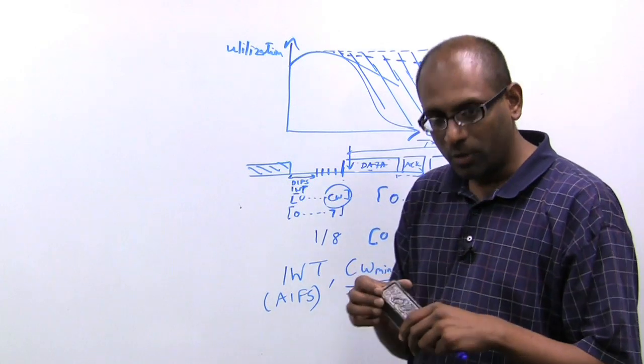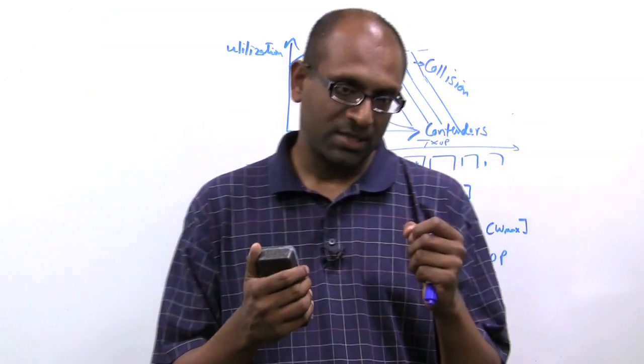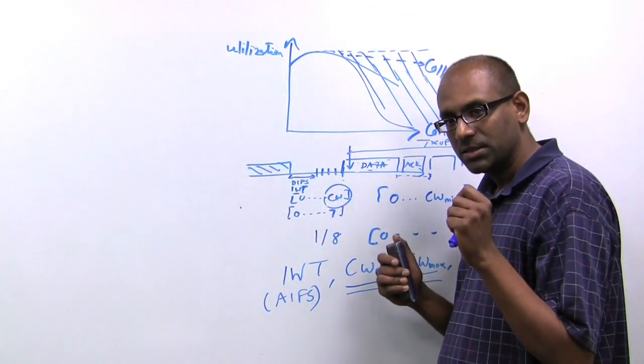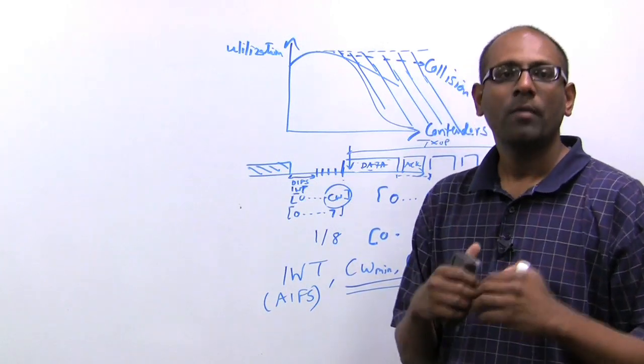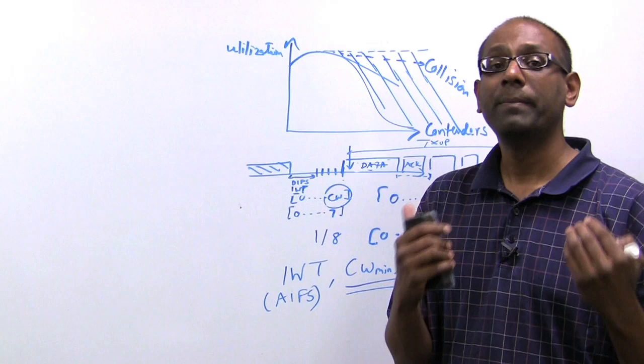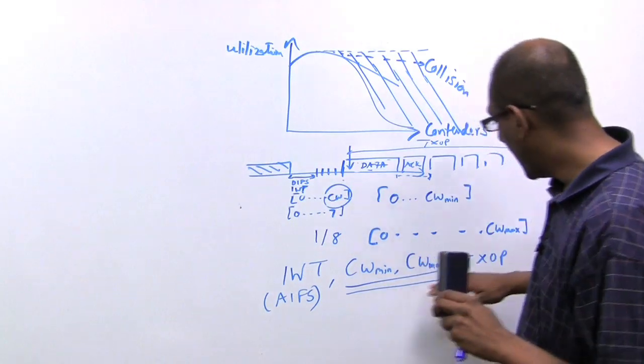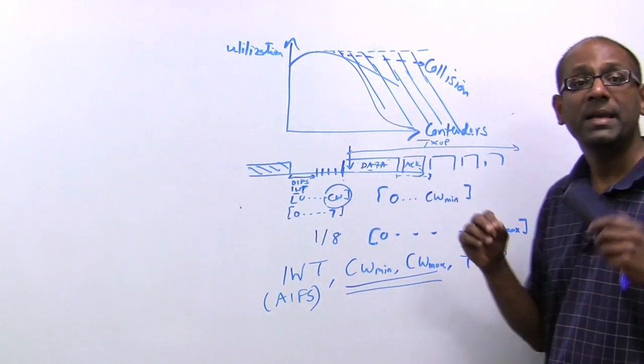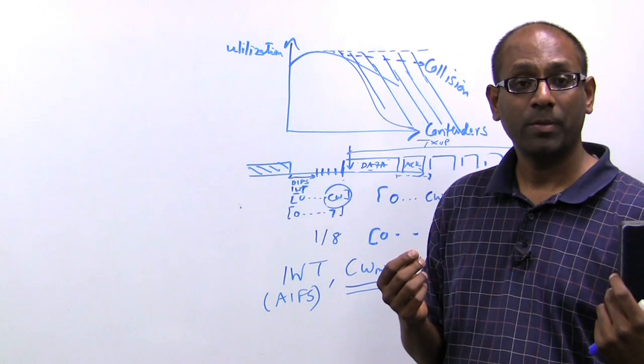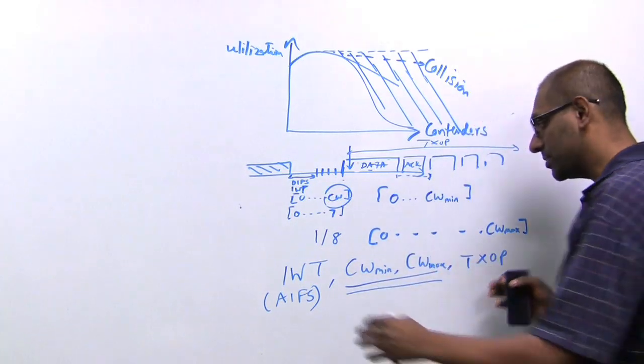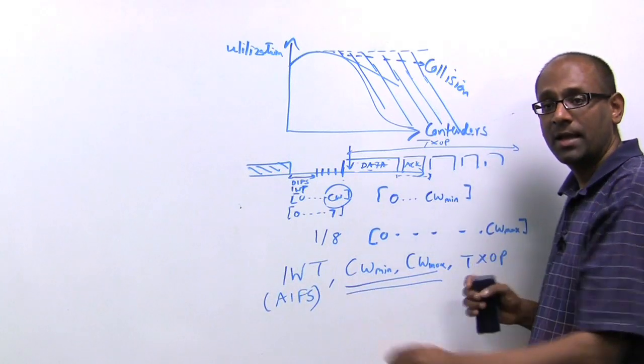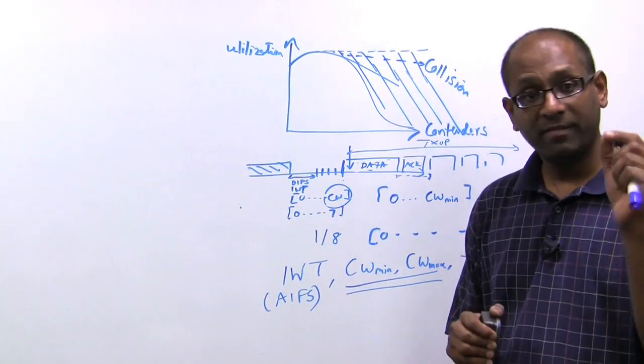If you go to the video that talks about virtual port, you will notice that each of these devices in a Meru system is allocated its own virtualized access point, what we call a BSS ID, and these values are advertised on a per BSS ID, or virtualized access point basis. Effectively, what it does is it allows us to take these parameters and customize them on a per device basis.